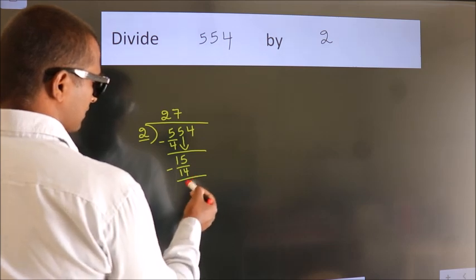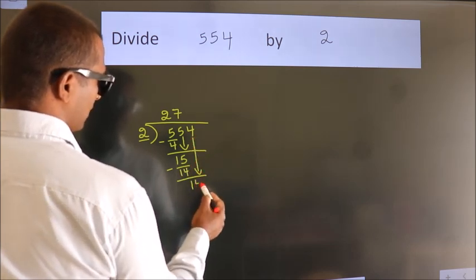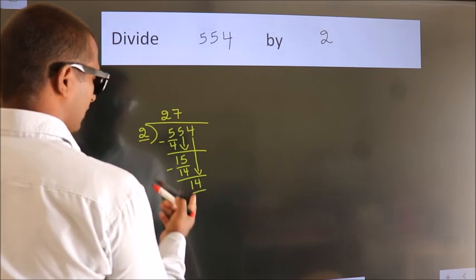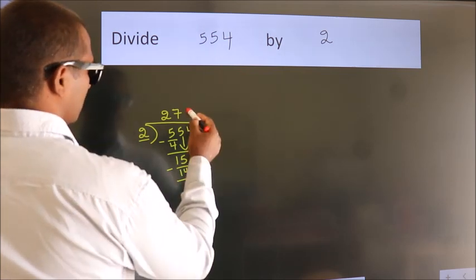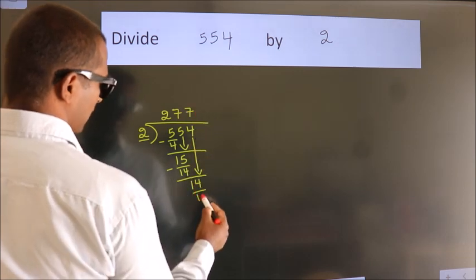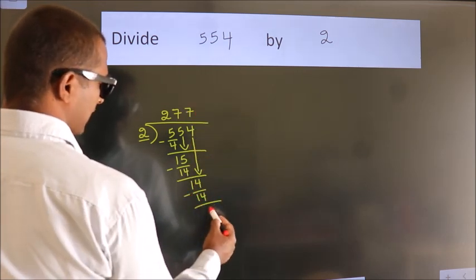After this, bring down the beside number. 4 down, so 14. When do we get 14 in 2 table? 2 7's 14. Now we subtract. We get 0.